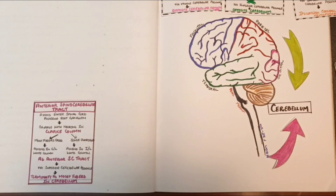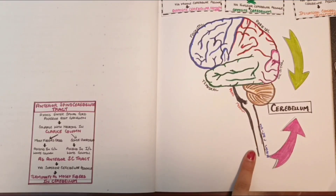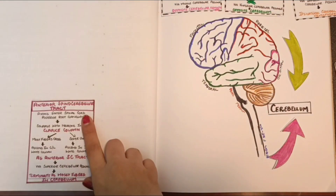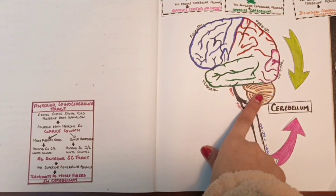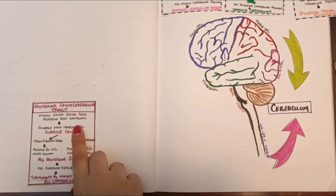Information from the muscle spindles, tendon organs, and joint receptors is also conveyed to the cerebellum via the spinal cord. The tracts involved for this purpose are the anterior and posterior spinocerebellar tracts and the cuneocerebellar tract. All of these tracts are responsible for conveying information from muscles and joints via the spinal cord to the cerebellum. The first tract which sends afferents from the spinal cord to the cerebellum is the anterior spinocerebellar tract.